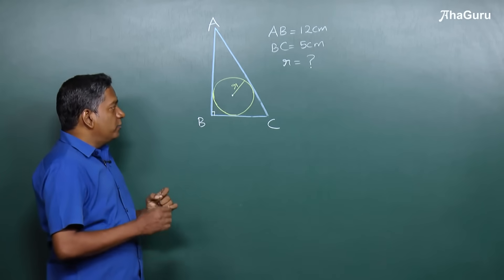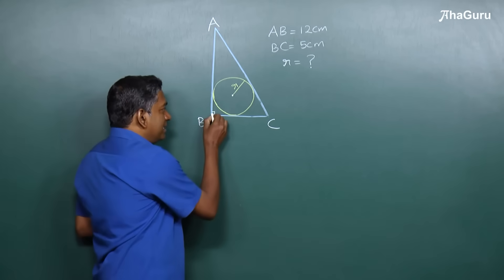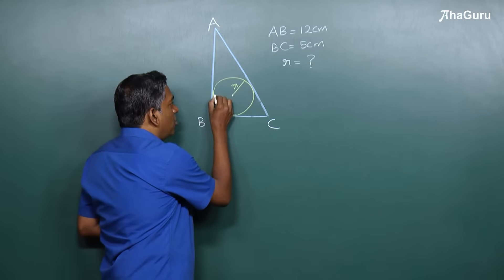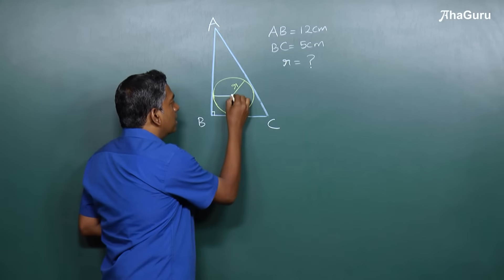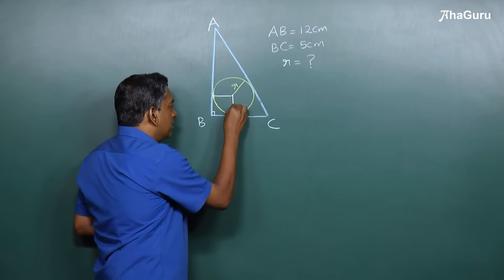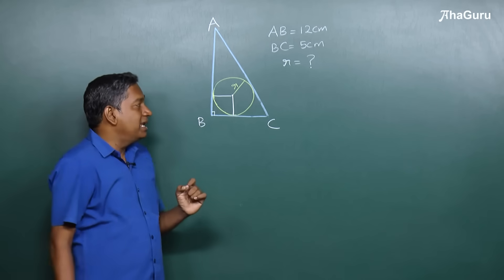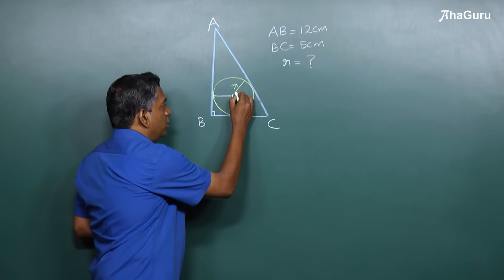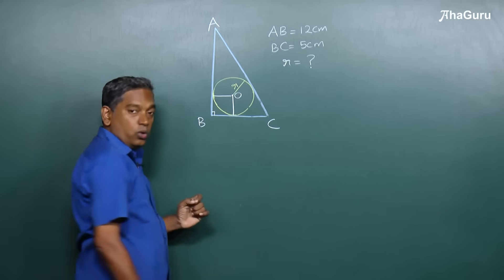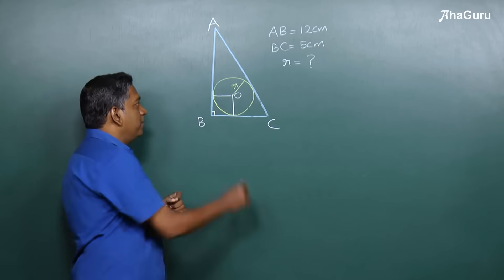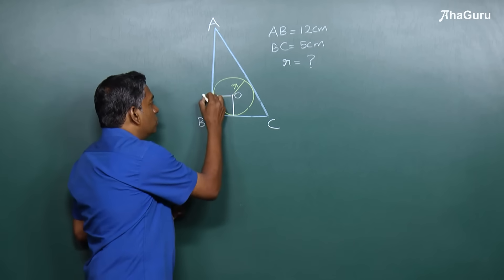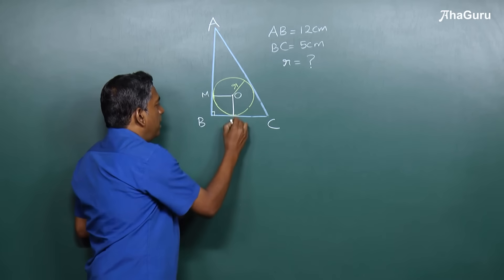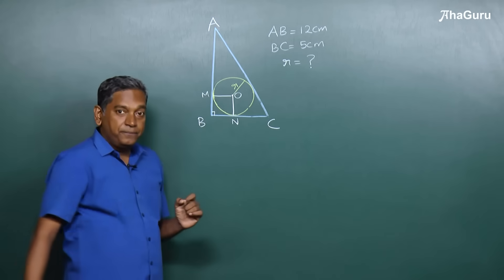For this question, given that angle B is the right angle, if we draw a radius here and here, let's see what will happen. Let's say the center of the circle we call it O, and we call these two radii OM and ON.